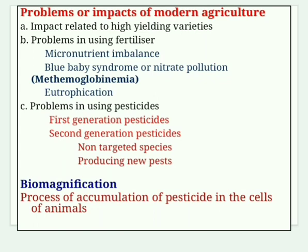Use of high-yielding hybrid varieties encourages monoculture. If there is any attack by pathogens, it will devastate the cropland and increases bacteria levels in soil and water. Regarding fertilizer problems, micronutrient imbalance occurs because macronutrients — mainly nitrogen (N), phosphorus (P) and potassium (K) — are used in chemical fertilizers; they boost crop growth but excessive use causes micronutrient imbalance.